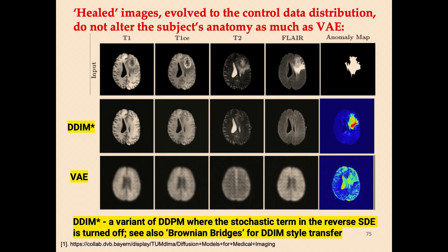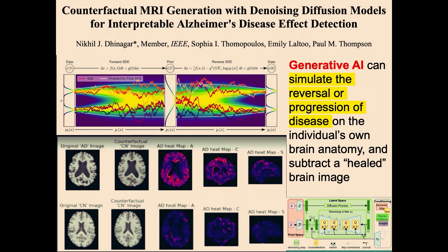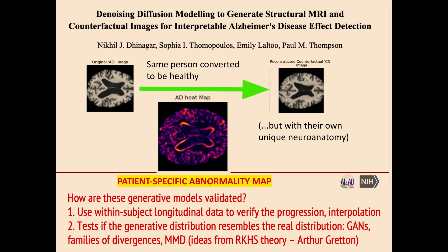DDIM — denoising diffusion implicit models — turns the noise off in the reverse SDE. You can say: I'd like an image that looks like this patient, but could you train it on normal data and give me a normal-looking brain that looks like that person, where the difference might be their pathology. With DDPMs it's even better — this is a diffusion model trained on healthy brains. You give it a patient's brain, it finds the closest it can generate using normal brains, and there's a beautiful map of abnormality. Generative AI can simulate the reverse law progression of disease on the individual's own brain anatomy and subtract a healed image of the person.